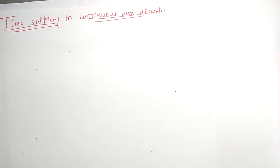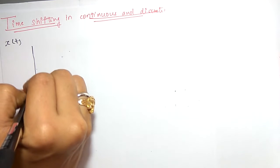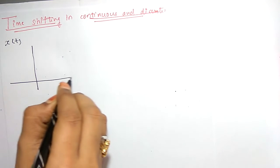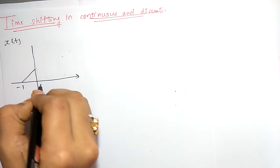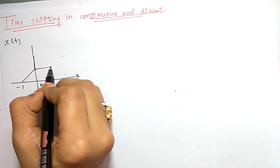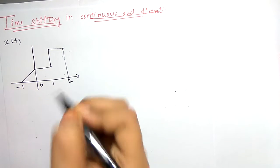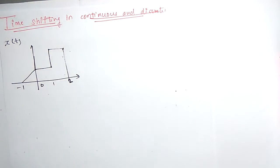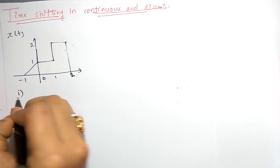In continuous time domain, let's consider a function X(t). Taking a known example: from minus 1 to 0 it is 1, again from 0 to 1 it will be 1, after that it changes. We have already discussed this function, so this is X(t).